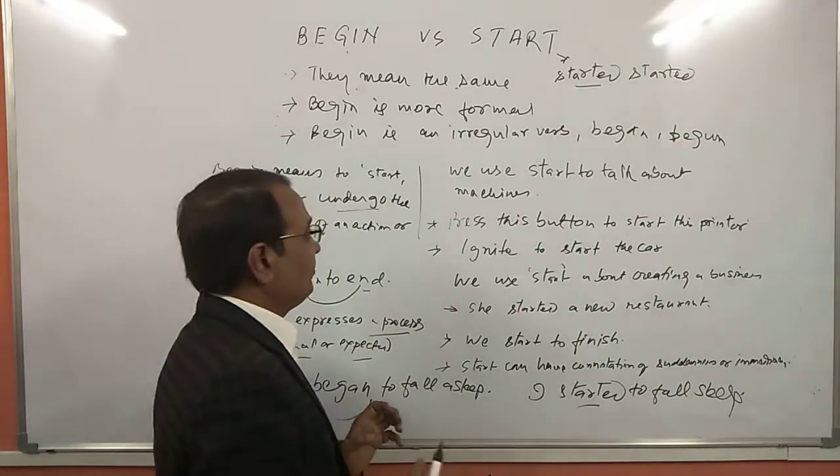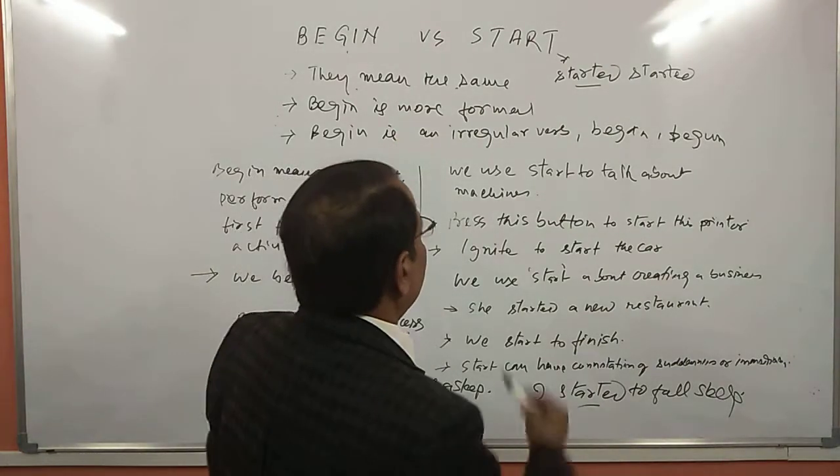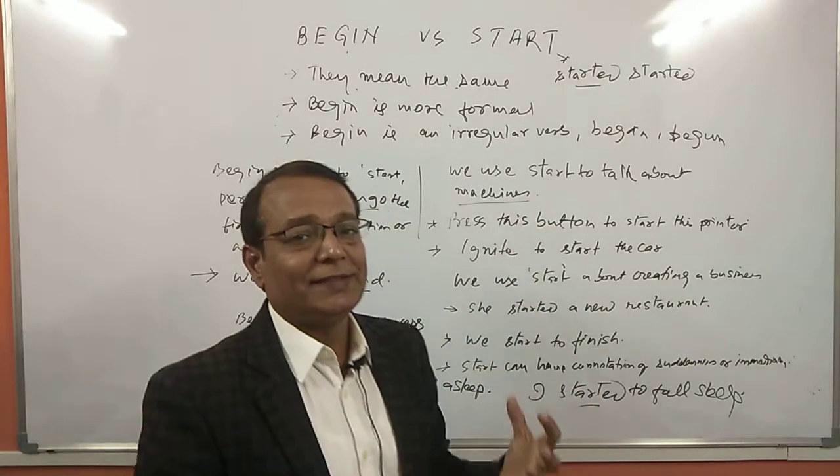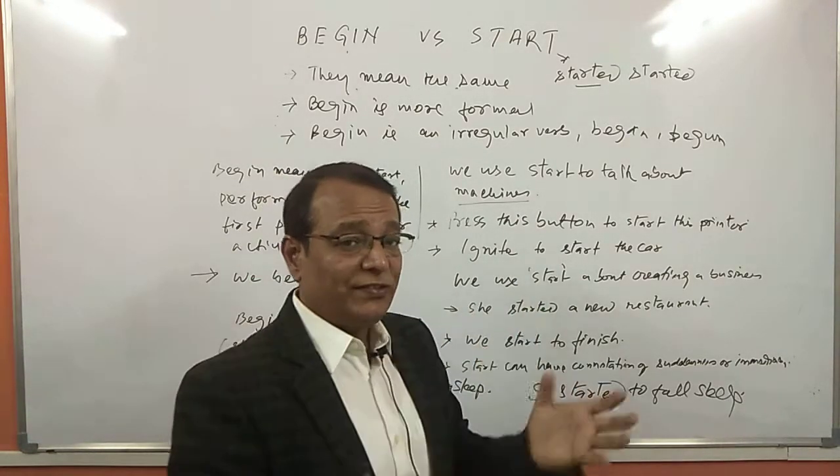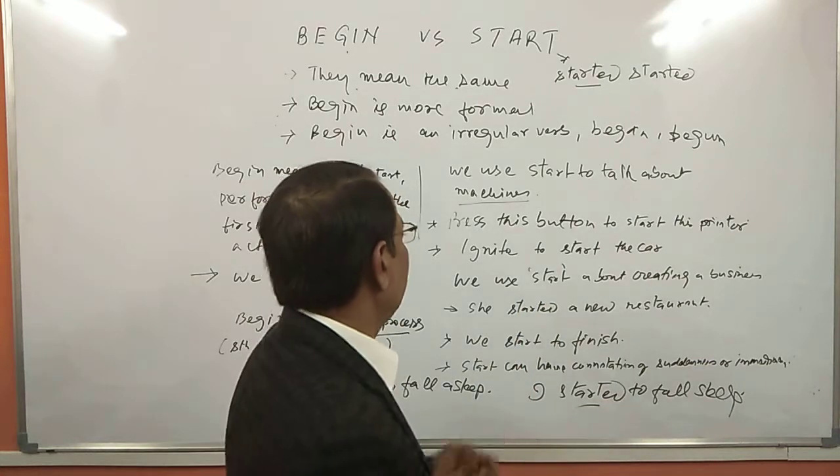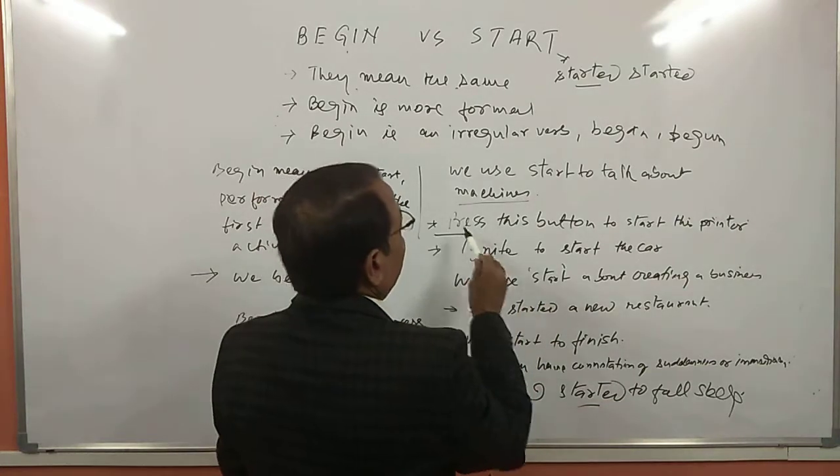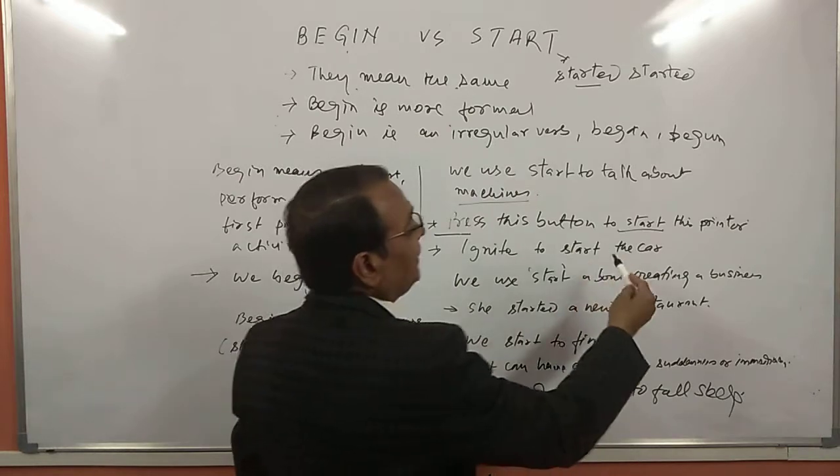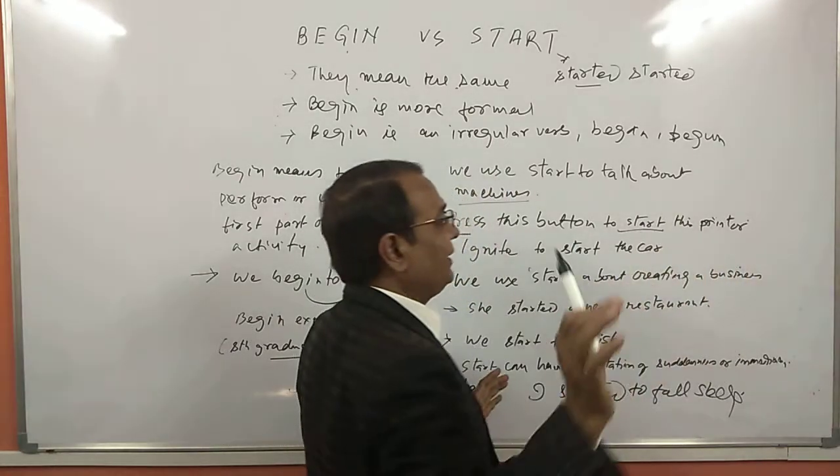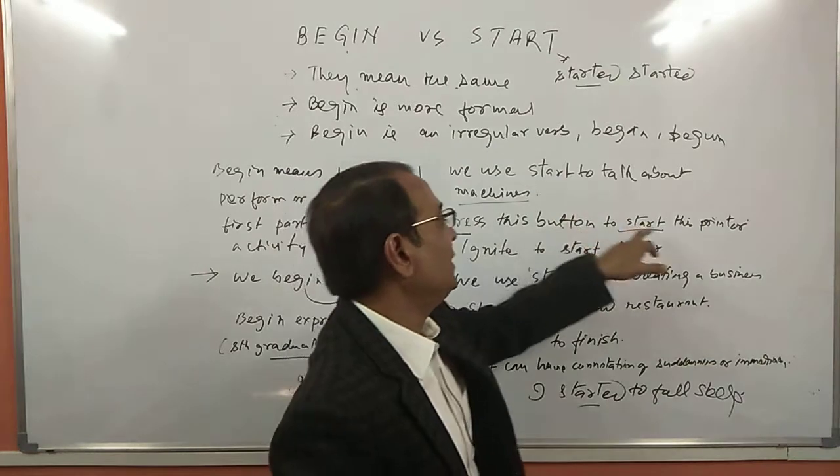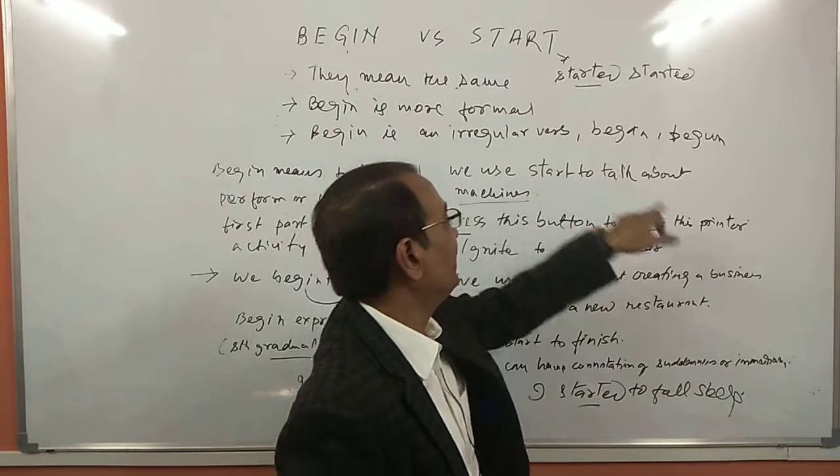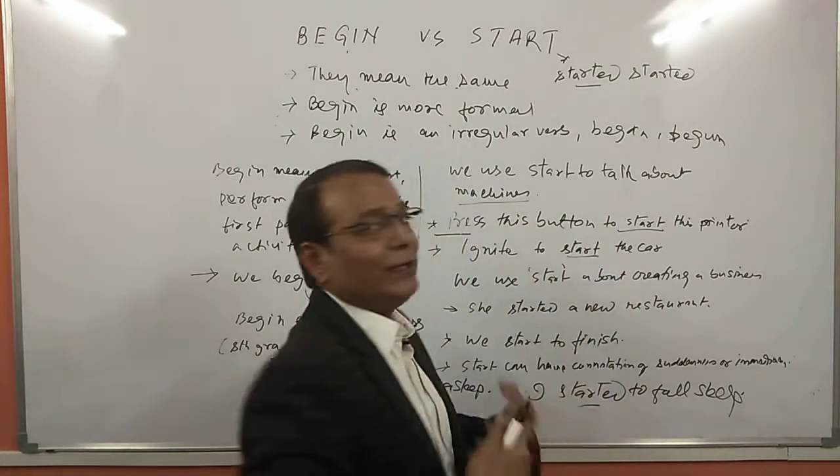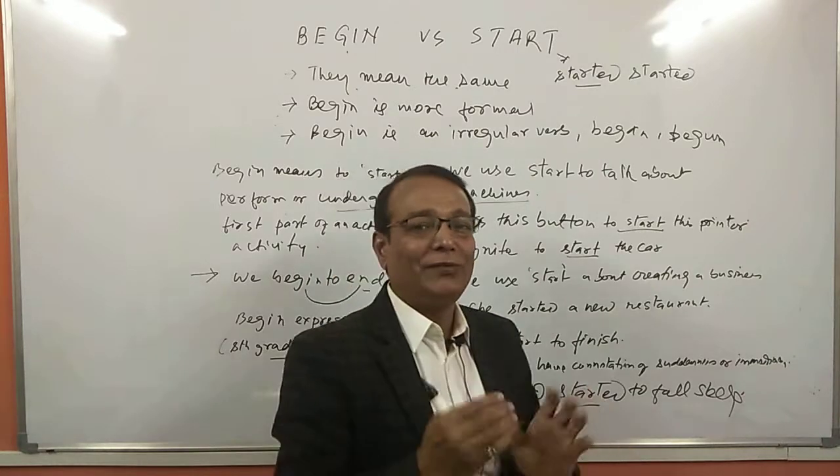When we are using start, we have to keep certain things in mind. We use start to talk about machines. When machines or some mechanical things, just like car or printer, computer, all the machines. Here, I have written a sentence: Press this button to start this printer. If you speak this language, press this button to begin this printer, it's going to be incorrect. So correct sentence is press this button to start the printer because printer is a machine. So when you are talking about machines, always use start. Ignite to start the car. We start our car. We cannot say that we begin our car.